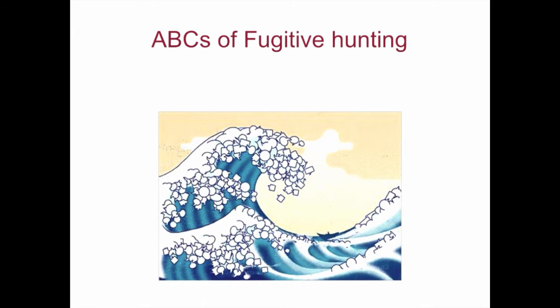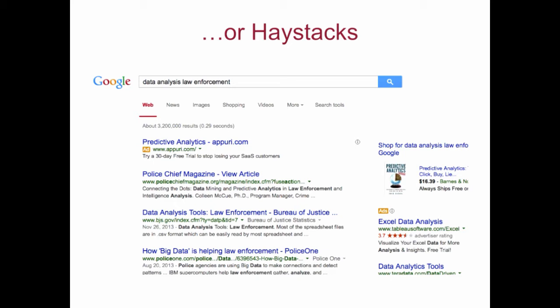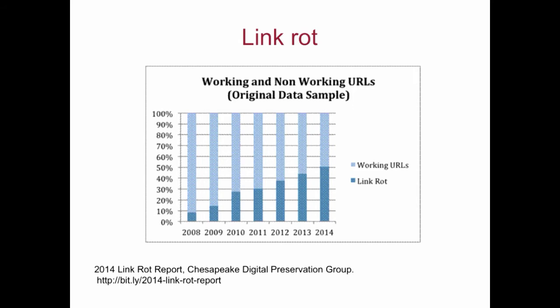Put yourself in an information seeker's shoes. Which search result would you rather see if you were looking for information on, for example, data analysis and law enforcement? Would you like to see your library's catalog results of 134 targeted and organized, ads-free search results — including this fugitive document I collected from the Bureau of Justice Assistance? Or would you rather see Google's 3.2 million search results, which include ads, news items, and other random, unmediated information? Secondly, and perhaps more importantly, is the issue of link rot. Those 3.2 million search results make it seem like the public has amazing information access. But access today does not equal permanent public access, which is the core tenet of the FDLP, and this access is completely at the mercy of information producers.